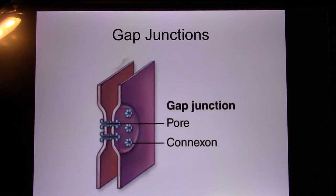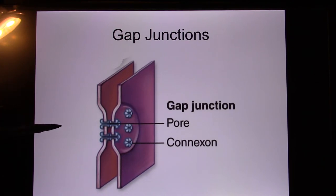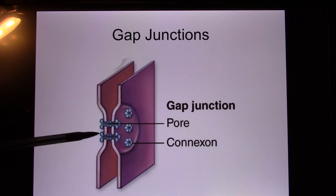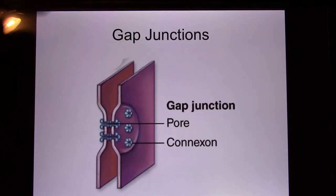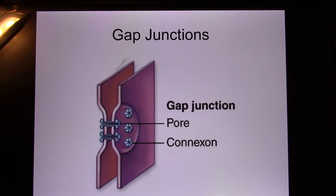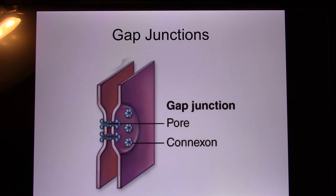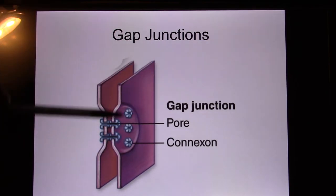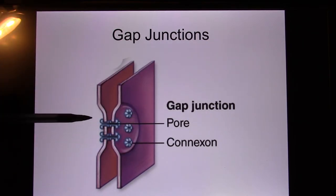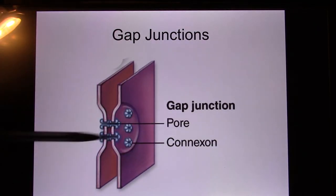The third junction is the gap junction — a small pin. Even though it pins cells together, its main function is like an ion channel. It provides an opening so ions can quickly pass from cell one through the gap junction to cell two to cell three, making all the cells behave like one cell. This happens in the skin and also in cardiac muscle, which is why the heart works like one cell and you can record a combined electrical signal — that's the EKG.